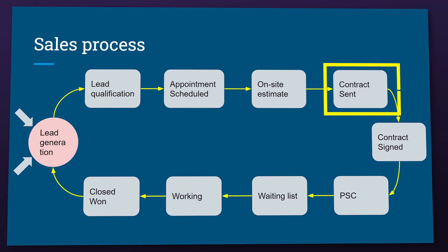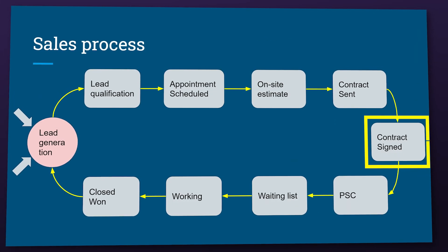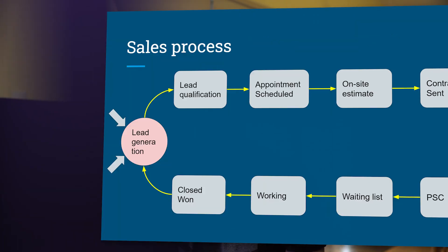Next is contract sent. We move the deal to this stage once the contract has been sent, and we also send some emails about the contract itself and about our company. We follow up a few days later via phone call and email. Then we have contract signed. Once the contract is signed we move the deal here, workflows are triggered, and emails regarding the project are sent. We also generate a lot of tasks regarding the project, like getting colors and creating a sales packet for operations.